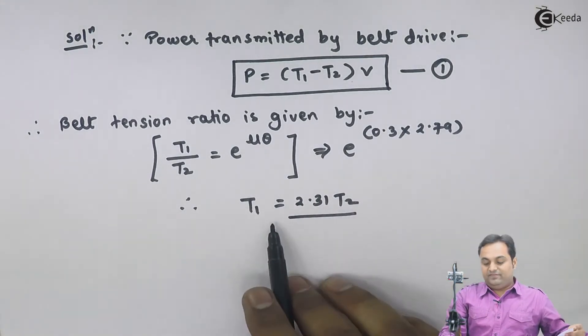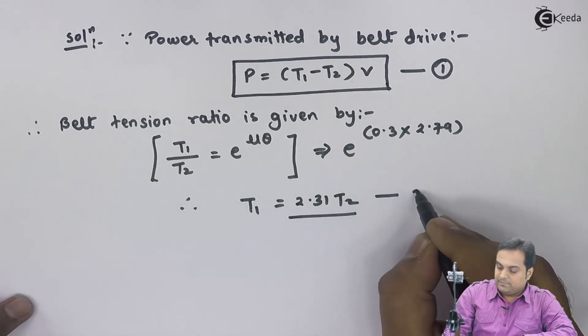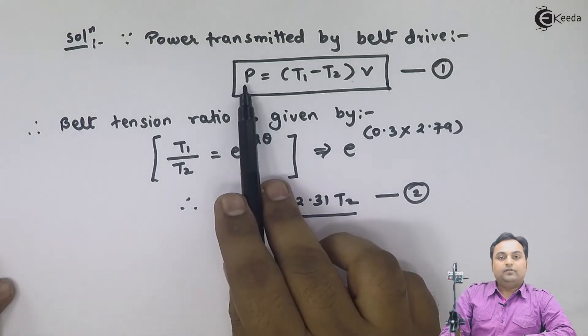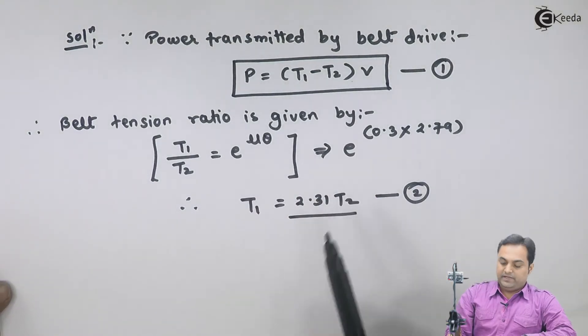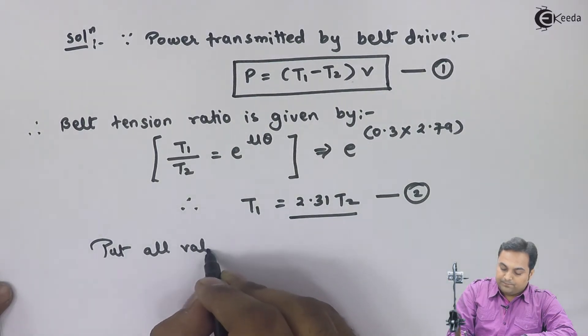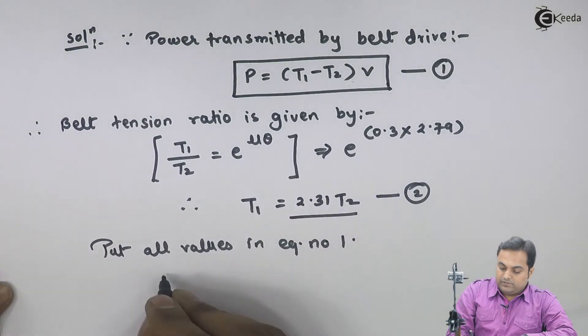Now, once I have the relation, I will keep this as my second equation and then I know the value of power and velocity. So I will say that put all values in equation number 1.